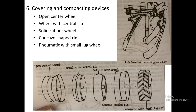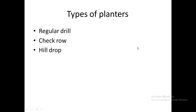The next component is the covering and compacting devices. Different types of wheels are used for covering and compacting soil in the furrows after seeds are placed: the open center wheel, the wheel with central drip, the solid rubber wheel, the concave shaped rim, and the pneumatic wheel with small lugs. Blades can also be used for covering the opened furrow.